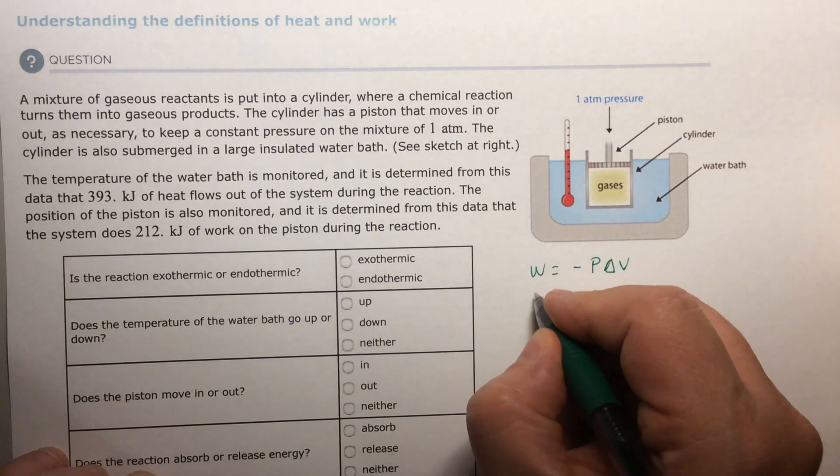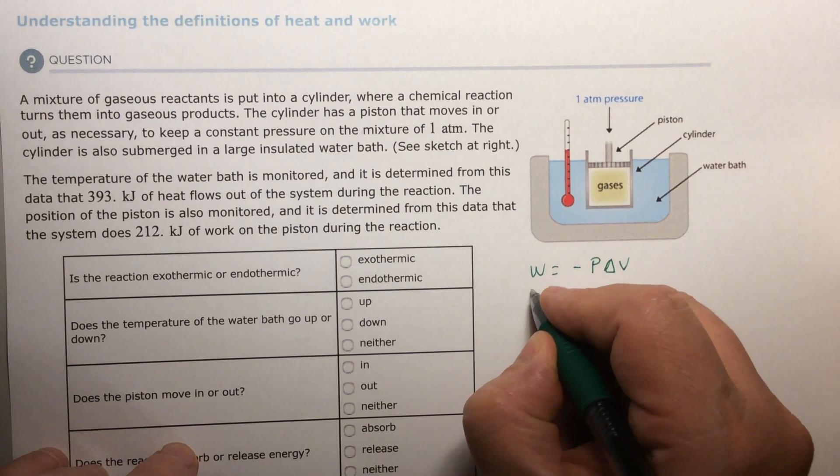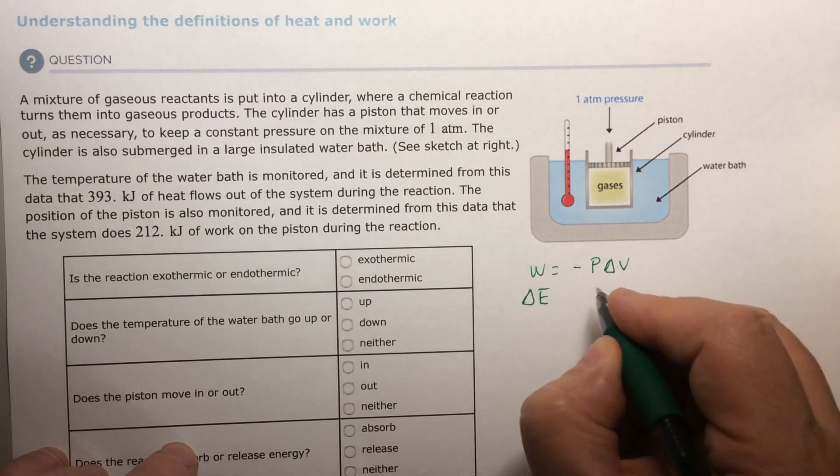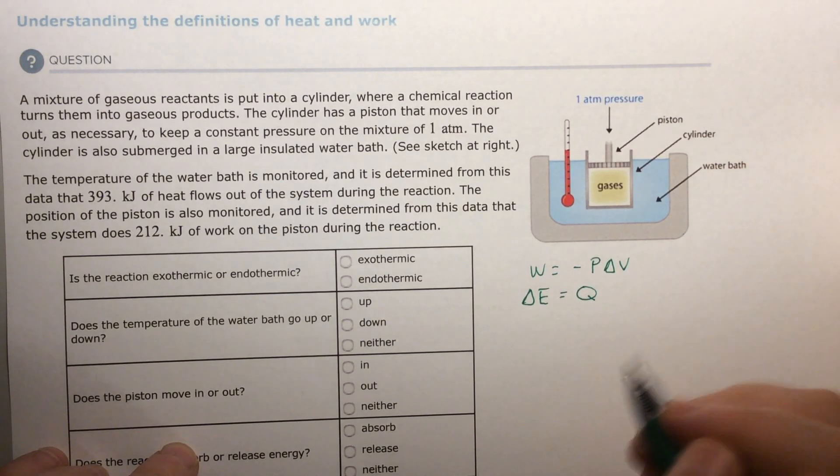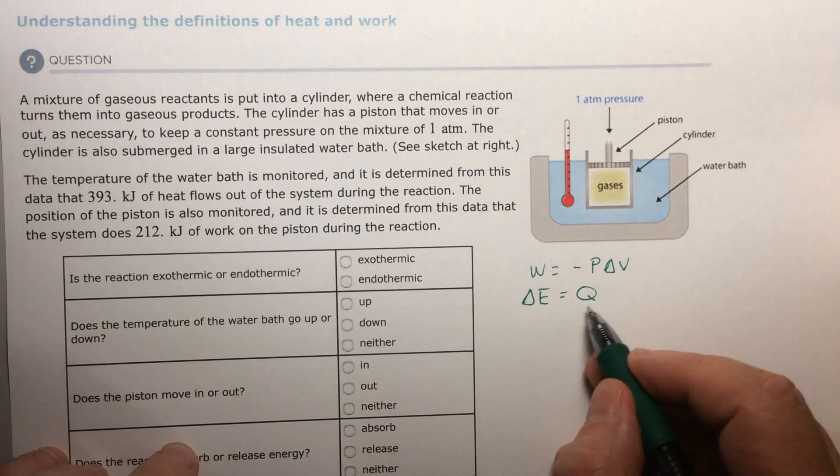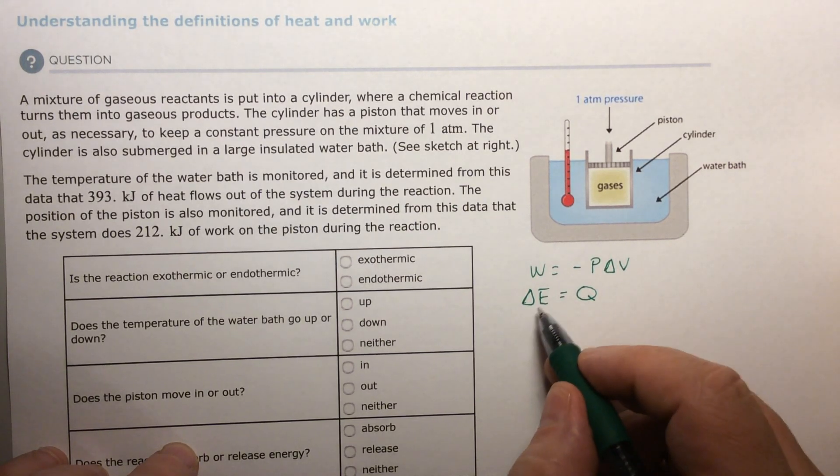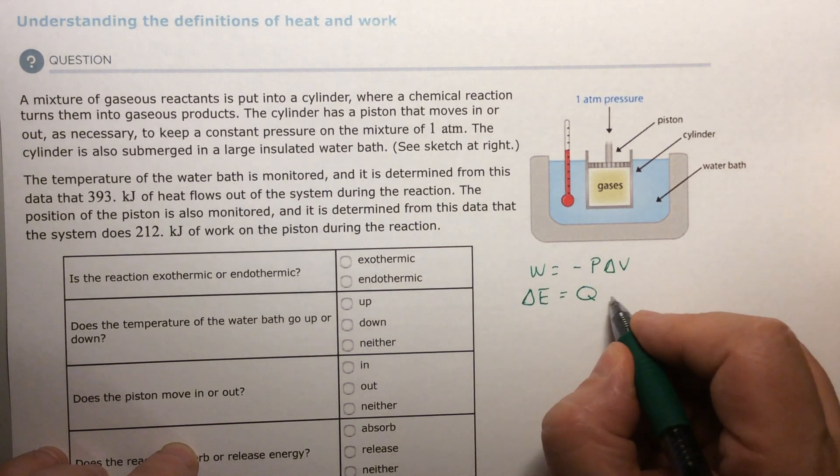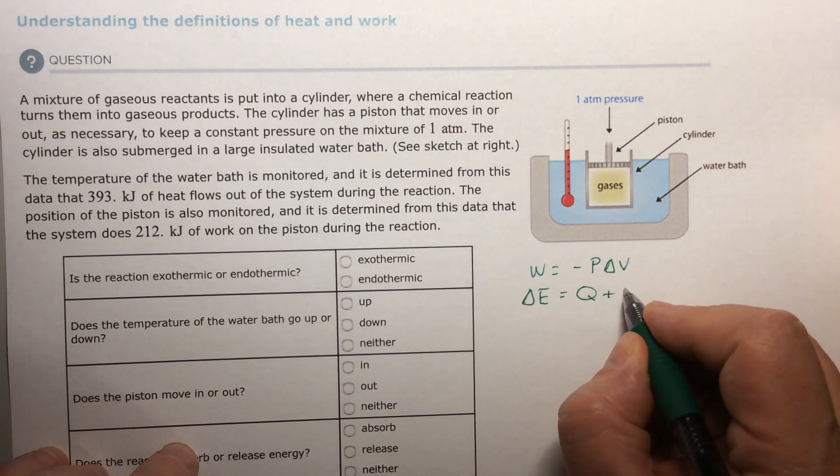You're going to see that the change in energy is going to be equal to two things. It's going to be equal to the heat that's put into a system or taken out of a system. If it heats something else, it's going to be a negative Q. If it gets heated, it'll be a positive Q. Your energy will go up.